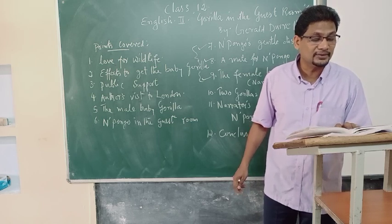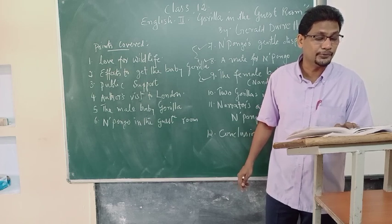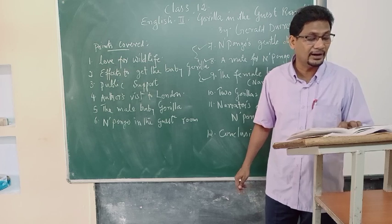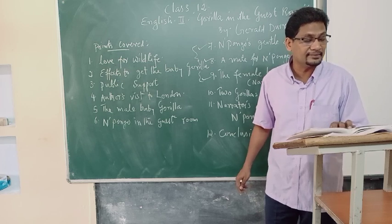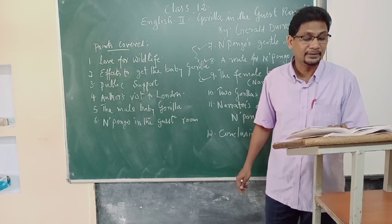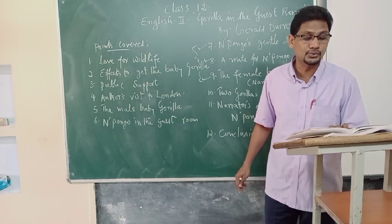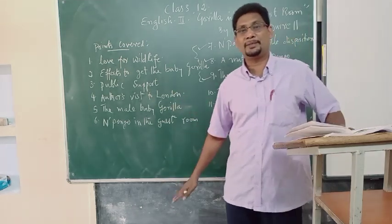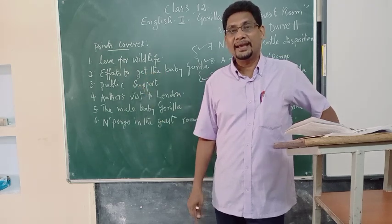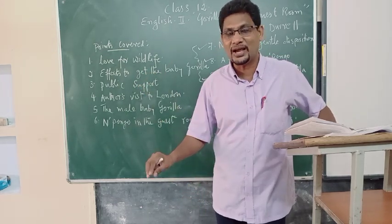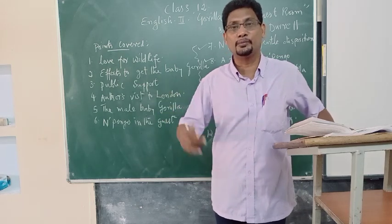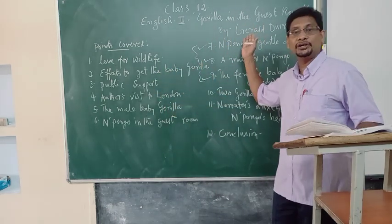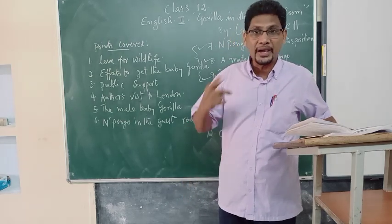Durrell says: 'I have no use for zoos that acquire animals purely for exhibition and make no effort to provide them with a mate. This applies particularly to apes.' When they are young, they accept the human beings around them as their adoptive — if slightly eccentric — family. But then comes the time when they are so powerful that, if you have any intelligence, you do not treat them in the same intimate way. As they grow, they cannot be kept with humans for various reasons. Intelligently, Gerald Durrell thought of getting a mate for Pongo.